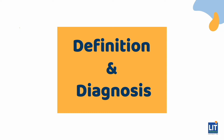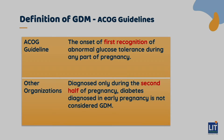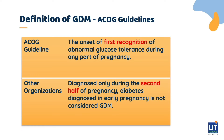The definition of GDM offered by the ACOG guidelines is the onset of first recognition of abnormal glucose tolerance during any part of pregnancy. This is different from those by other organizations, which talks about diabetes diagnosed only during the second half of pregnancy. For these other organizations, diabetes diagnosed in early pregnancy is not considered GDM.